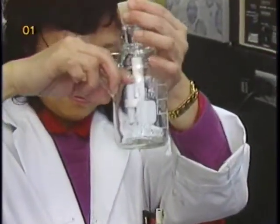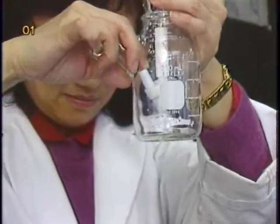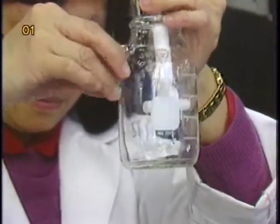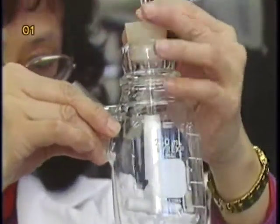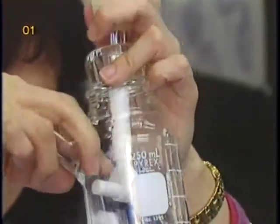The impeller and other parts of the spinner flask can then be put back together. However, it is important to make sure that enough space is left between the bottom of the impeller and the bottom of the flask.